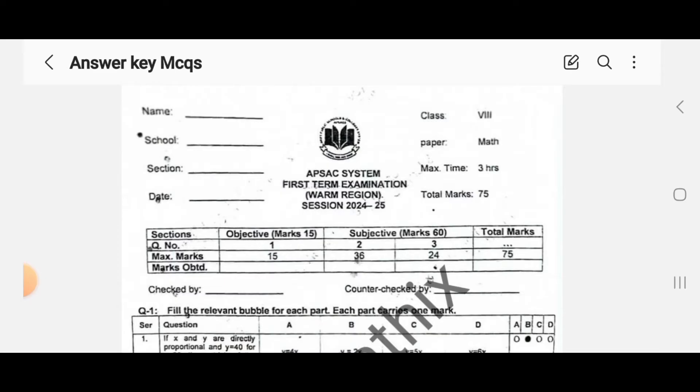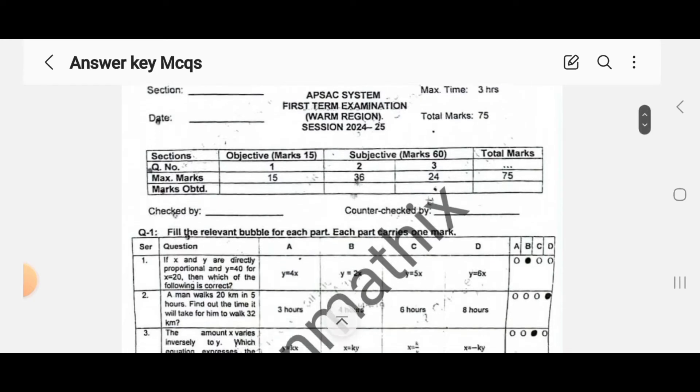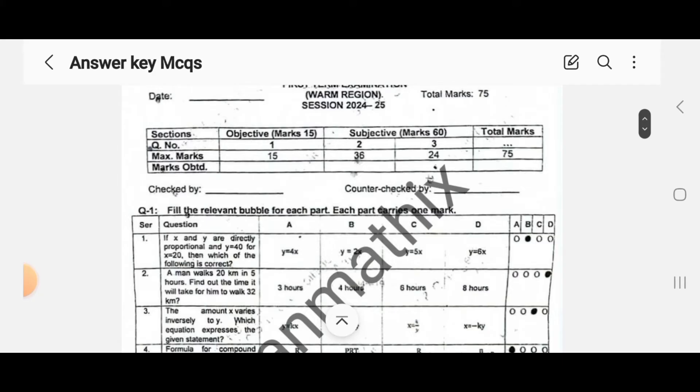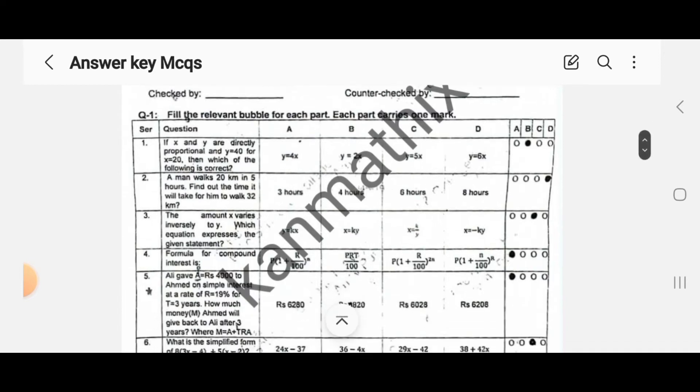Your paper comprises 75 marks: objective portion of 15 marks and subjective 60 marks. So question number one, objective portion. Fill the relevant bubble for each part. Each part carries one mark. MCQ number one, correct option is: